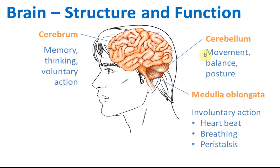So cerebellum is for movement and balance, and medulla oblongata is for involuntary actions. These are the structures of the brain that you need to know, along with their functions and their names.